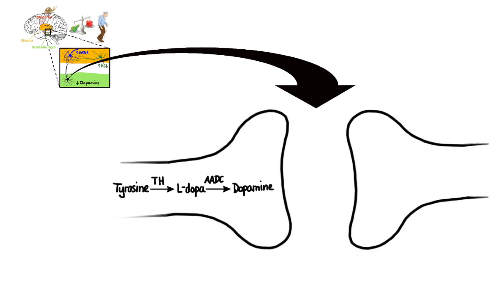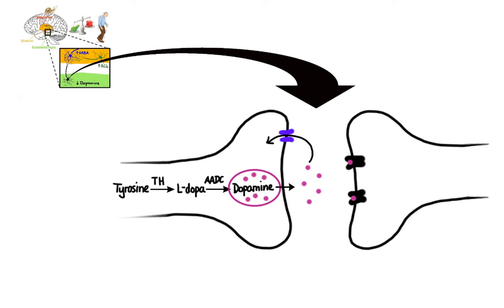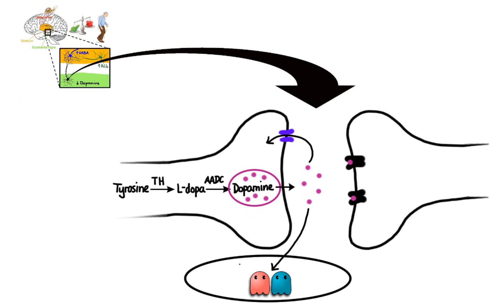Dopamine is then loaded into synaptic vesicles and released by physiological stimuli into the extracellular space, where it can bind to dopamine receptors expressed on the postsynaptic neuron. Excess dopamine in the synapse is reuptaken back into the neuron or into glial cells, where it gets metabolized by monoamine oxidase (MAO) and catechol-O-methyltransferase (COMT). It is important to note that while the MAO enzyme exists in two forms — type A and type B — the type predominantly found in glial cells is MAO type B.